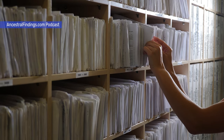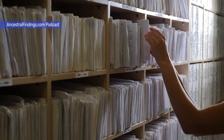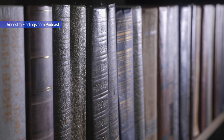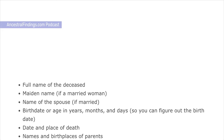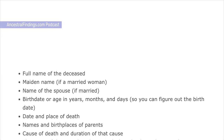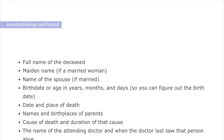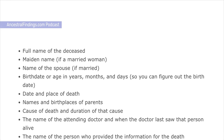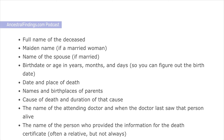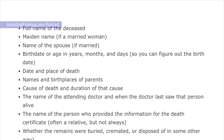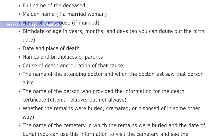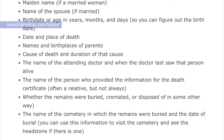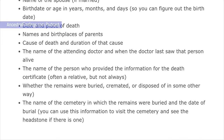Very early death records may just have the name, age, and death date of the deceased. Sometimes parents' names are included, but not always. Later death records have a lot more information available on them. You can find such things as the full name of the deceased, maiden name if a married woman, name of the spouse if married, birth date or age in years, months, and days so you can figure out the birth date, date and place of death, names and birthplaces of parents, cause of death and duration of that cause, the name of the attending doctor and when the doctor last saw that person alive, the name of the person who provided the information for the death certificate — often a relative but not always — whether the remains were buried, cremated, or disposed of in some other way, the name of the cemetery in which the remains were buried, and the date of burial.